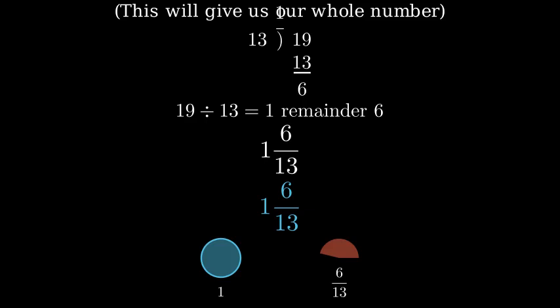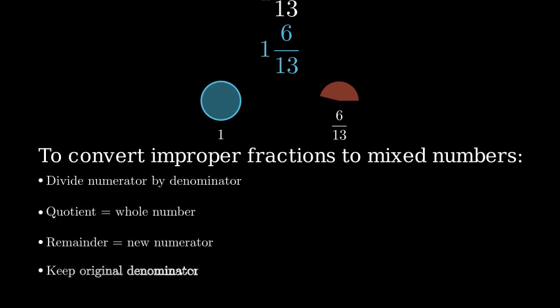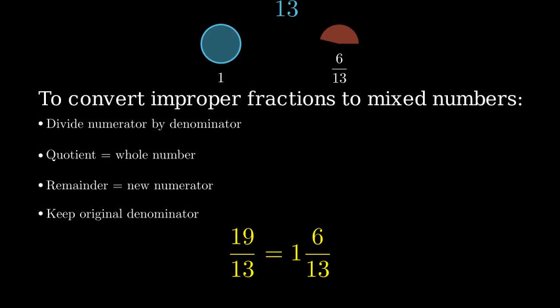So to summarize, to convert an improper fraction to a mixed number, first divide the numerator by the denominator. The quotient becomes the whole number. The remainder becomes the numerator of the fraction, and the original denominator stays the same. Therefore, 19 thirteenths equals 1 and 6 thirteenths.